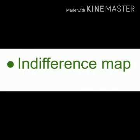Hello everyone. In this video I am going to cover the features of indifference curve and indifference map. Before going to that concept I would like to explain the shape of indifference curve. Due to the law of diminishing marginal rate of substitution, an indifference curve is always convex to the origin.